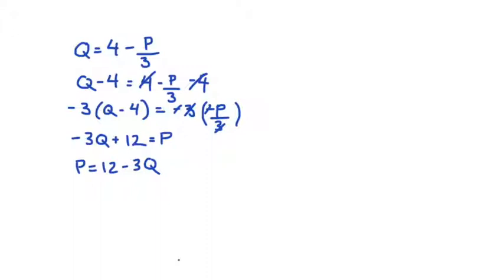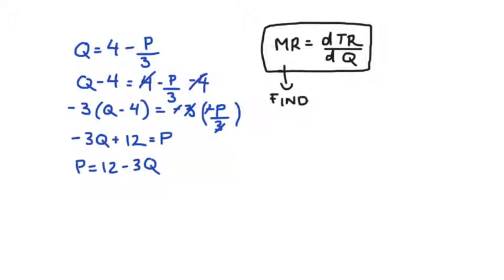So let's note up here that the marginal revenue function, that's the thing we are trying to find. Well, we can find that if we take the derivative of our total revenue function with respect to quantity. That's the rule that we're going to use. And what it tells us really is that what we need now is to find our total revenue function, so then we can take the derivative.